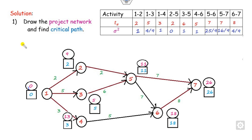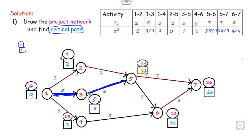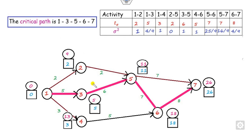Once all the earliest and latest occurrence times are computed, find the critical path. Look for nodes where the earliest and latest times are the same, and where the difference equals the activity duration. Node values match here — so this is a critical link. Continuing: 5, 5 and 11, 11 are the same, and the difference is 6, so this is on the critical path. For the path 11–11 to 26–26, the difference is not 7, so it is not critical. But 11–11 to 18–18 with difference 7 is critical, and 18–18 to 26–26 is also critical. Therefore the critical path is 1 → 3 → 5 → 6 → 7.